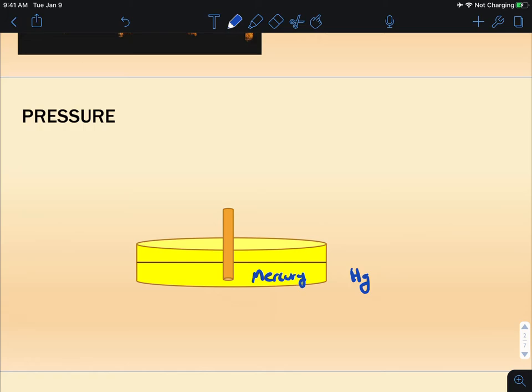So let's imagine we have this mercury trough here. And this little tube here, this is a tube that's closed at one end and open at the other. We fill it to the very brim with mercury, and then we tip it over into the mercury trough without letting any air in.